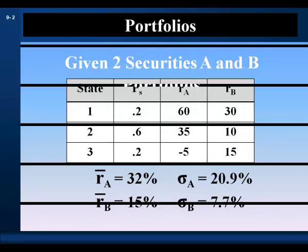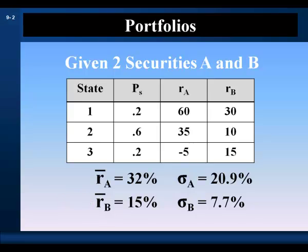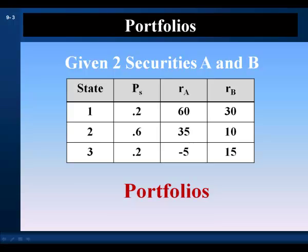Portfolios. Consider two securities, A and B. We calculated their expected returns and standard deviations from their probability distributions. We could invest in security A and receive a higher return, but also higher risk. Or we could invest in B for lower risk, but accept a lower return. However, rational investors don't put all their wealth in a single security. They divide their wealth among a combination of securities to form portfolios, gaining the benefits of diversification.